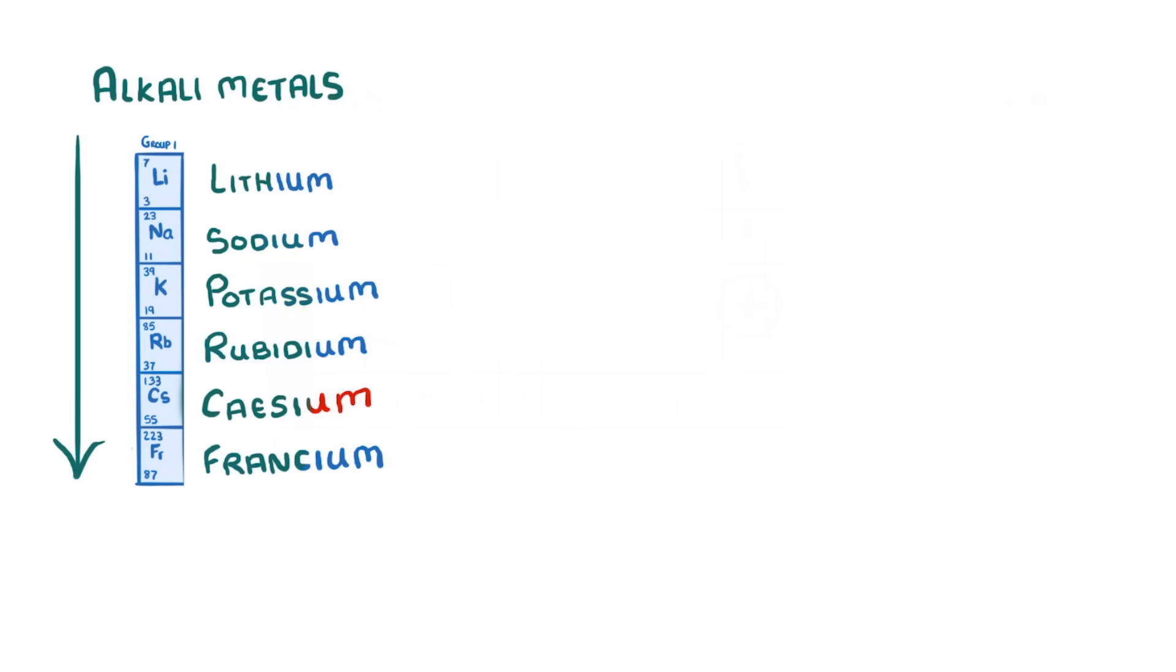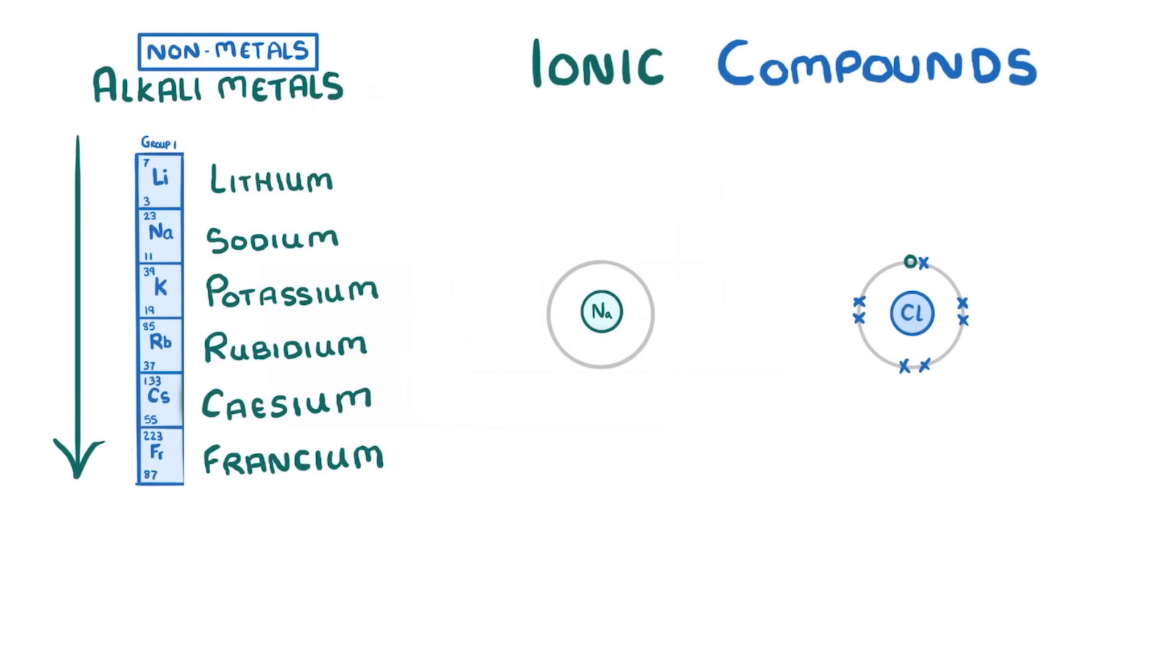Because alkali metals can lose their outer electrons so easily, they almost always form ionic compounds with non-metals. We'll take a closer look at ionic compounds in another video. But it's basically where a metal atom, like sodium, donates an electron to a non-metal like chlorine, so that both of them have full outer shells.